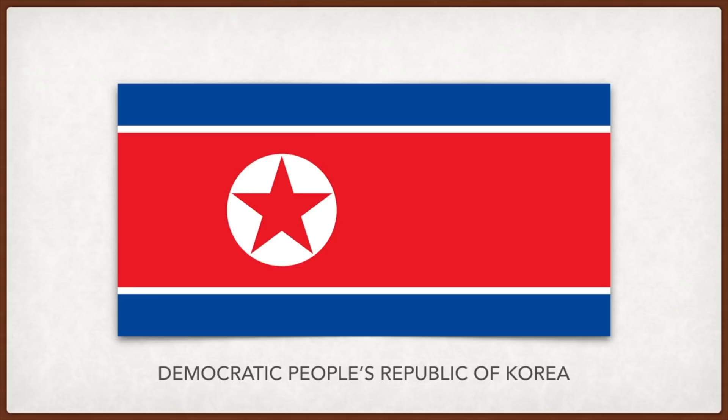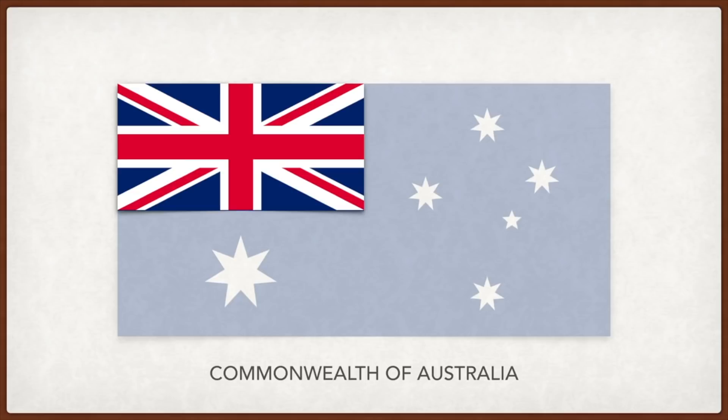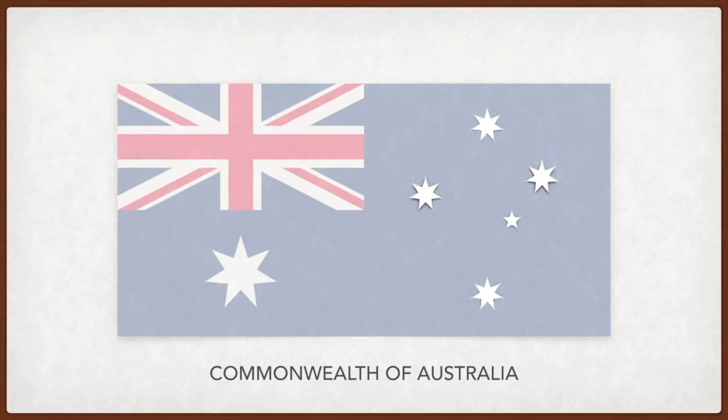Australia: the inclusion of the entire UK flag represents the history Australia has with the British. Below it is the Commonwealth Star. The Southern Cross is one of the most visible constellations in the Southern Hemisphere and has represented Australia since the early days of British settlement; the four main stars also symbolize justice, prudence, temperance, and fortitude.